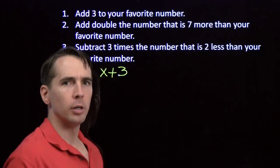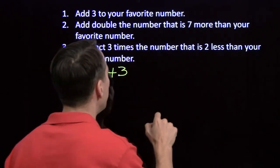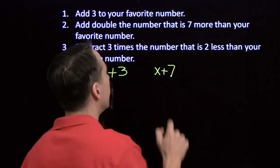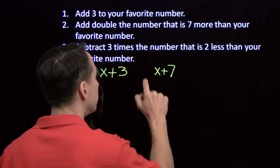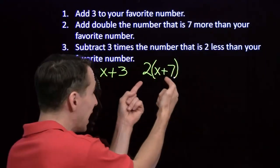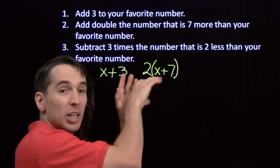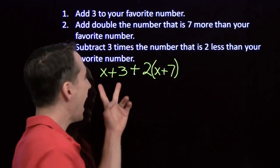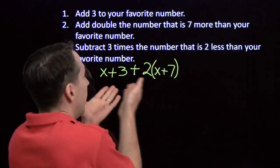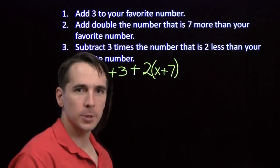Next step, double the number that is 7 more than our favorite number. Well, 7 more than our favorite number is X plus 7. And then we have to double that. And very important, I have to put these parentheses here, because I'm going to add the 7 first, and then I'm going to double the result. And then I'm going to take that and I'm going to add it to the number that was 3 more than our favorite number. All right, and that's what I'll have at the end of step 2.